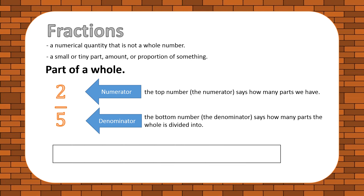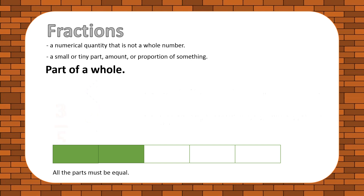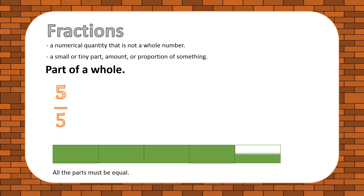Let's draw a model to show the example fraction. Remember, all the parts must be equal. Two out of five, three out of five, four out of five, five out of five. Five out of five means it has made a whole — if the value of the numerator is equal to the denominator, it has made an entire portion as a whole.